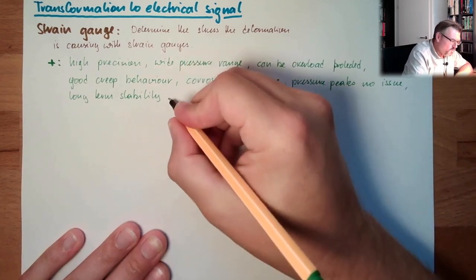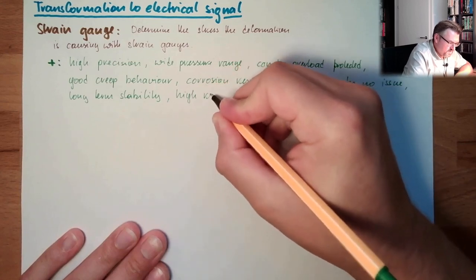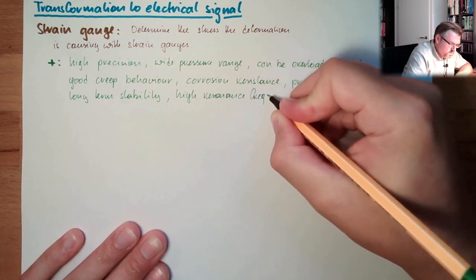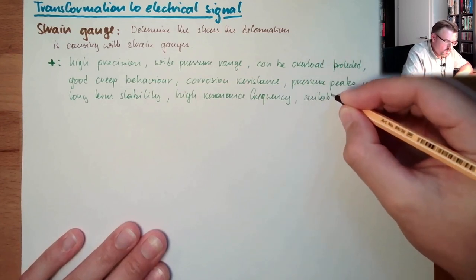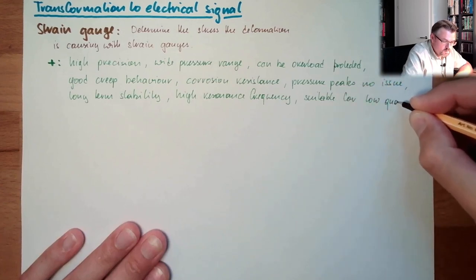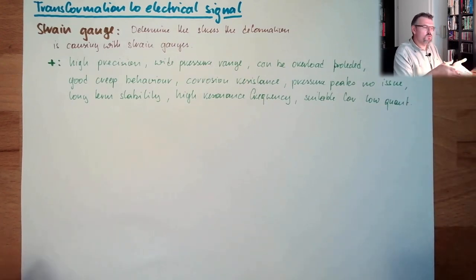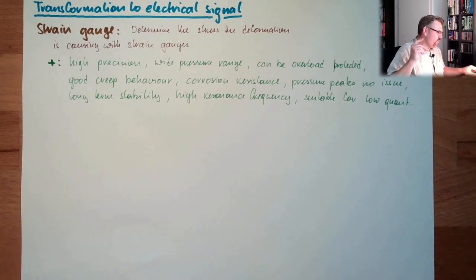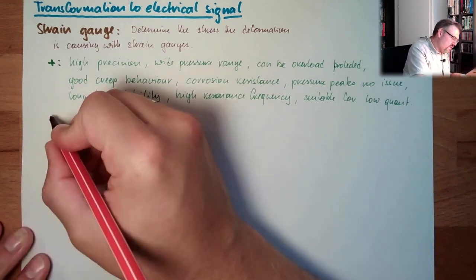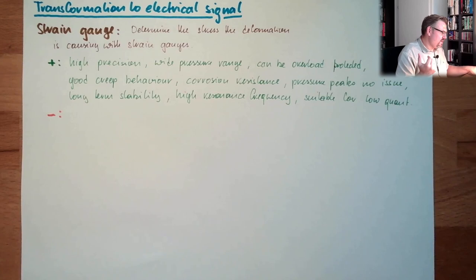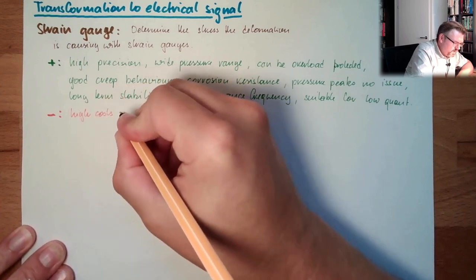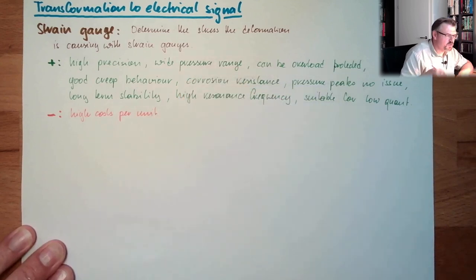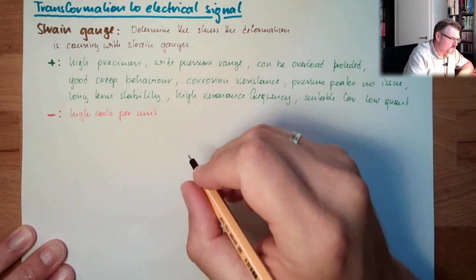And we have a pretty high resonance frequency and suitable for low quantities. So if you only have to produce some of those, you can make this. If you have produced a lot of them, then this might not be the right method. Because let's talk about the downsides. The downsides, it's pretty high costly. You now have to apply the glue, you have to apply the strain gauge, you have to test this. So there are high costs. High costs per unit. So for mass production, it's maybe not the best choice.